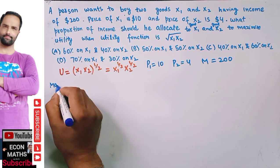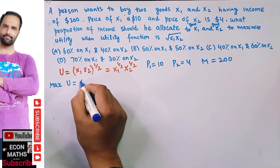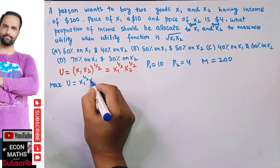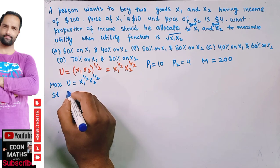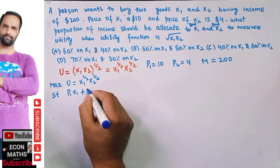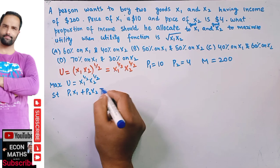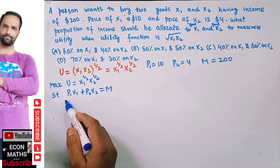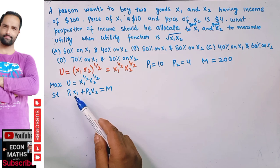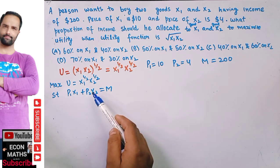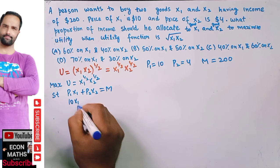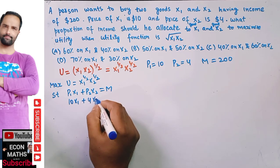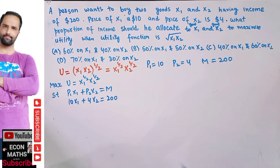We want to maximize U = X1^(1/2) · X2^(1/2), subject to the budget constraint P1·X1 + P2·X2 = M. Since P1 is 10 and P2 is 4, the budget constraint becomes 10X1 + 4X2 = 200.